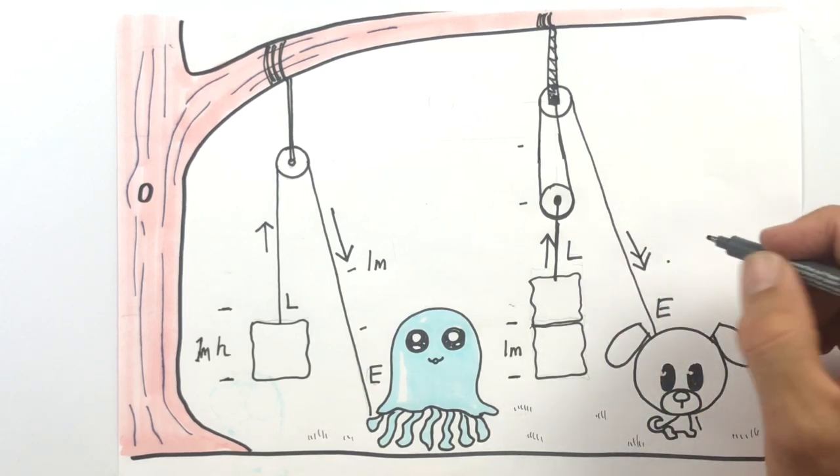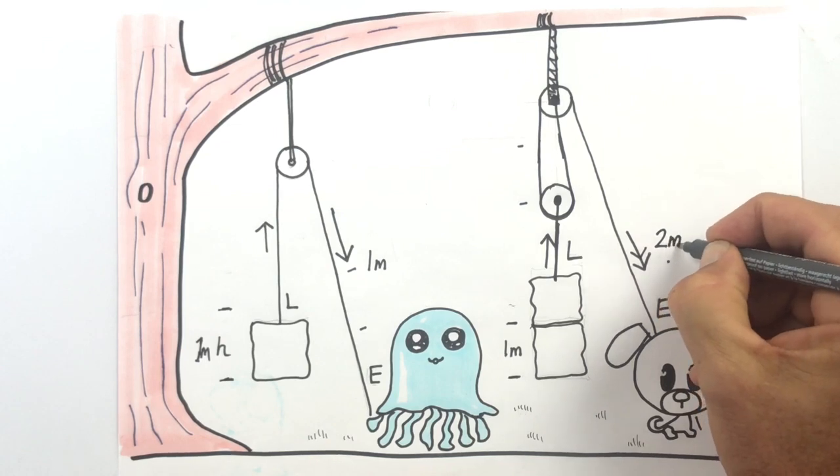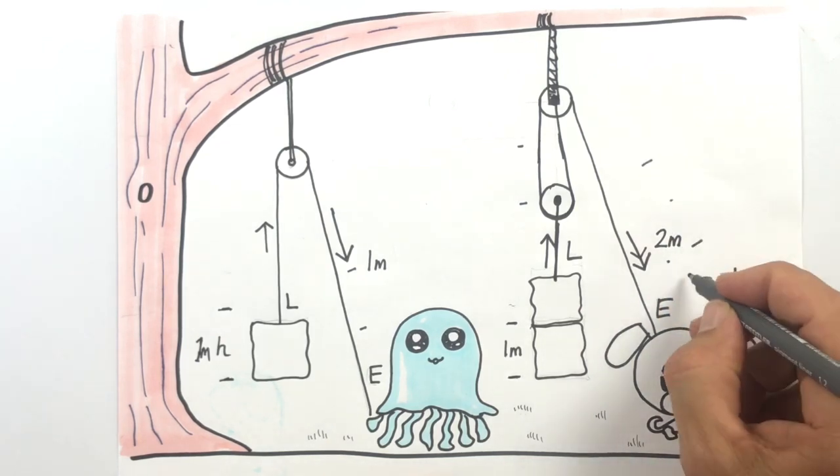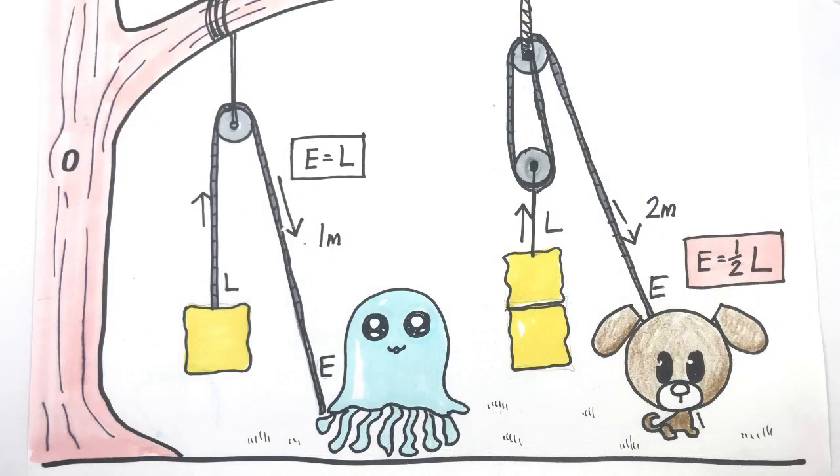To do that, he'll need to pull on the effort twice as far. He'll actually need to pull two metres of rope to get the load to move one metre in the air. That makes a simple machine. The effort is only half the load. It's twice as easy with two pulleys.